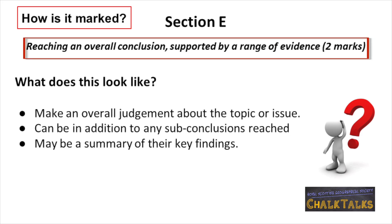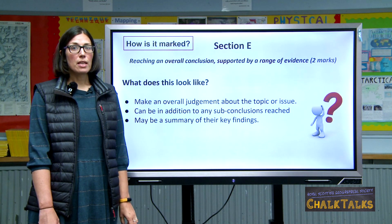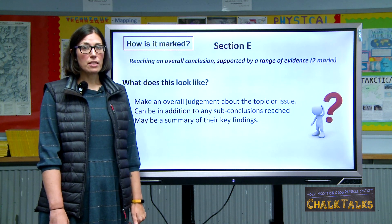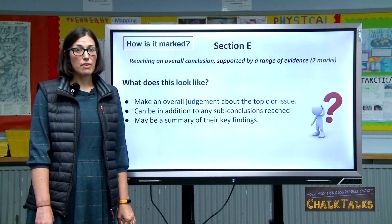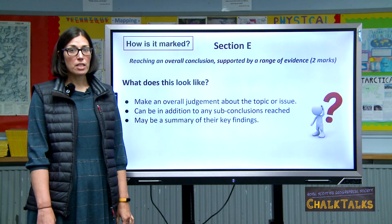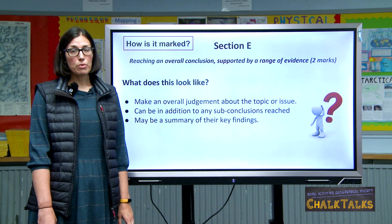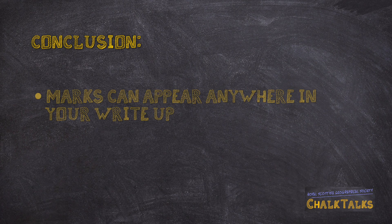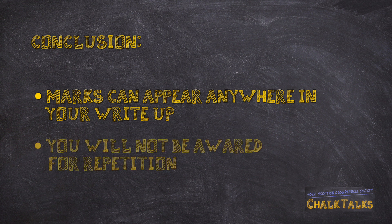Section E is about making an overall conclusion supported by the evidence that you have gathered and is worth two marks. This is your opportunity to go back to your original title and think about how you can answer your original question — have you proven or disproven your original hypothesis? Marks for conclusions can appear anywhere in your write-up, although you will not be awarded for repeated points.